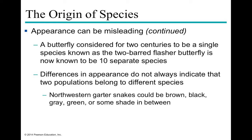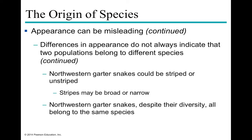Another example of misleading appearance: a butterfly was considered to be a single species for over 200 years and is now known to be 10 separate species — they look very similar but do not interbreed. Conversely, sometimes populations appear very different but are all able to interbreed. Garter snakes, for example, can be brown, black, gray, green, or any shade in between, striped or unstriped, with broad or narrow stripes, yet all belong to the same species.